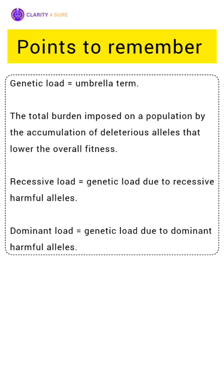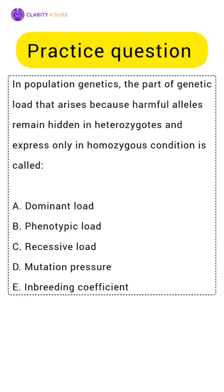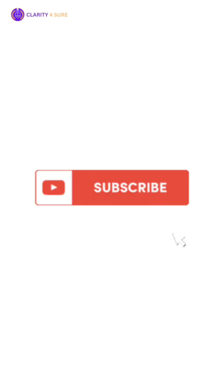Now let us look at a practice question. In population genetics, the part of genetic load that arises because harmful alleles remain hidden in heterozygous and express only in homozygous conditions is called — write your answer in the comment section and don't forget to hit the subscribe button.